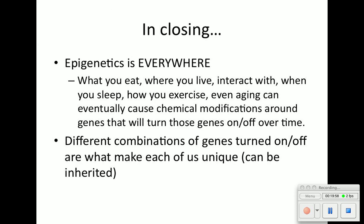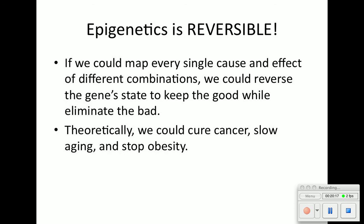In closing, epigenetics is everywhere. What you eat, where you sleep, who you interact with, when you go to sleep, how you exercise — even aging — can cause chemical modifications inside your DNA and could ultimately turn genes on and off over time. But it is reversible. If we can map every single cause and effect of different combinations, we could reverse gene states to keep the good while eliminating the bad. Theoretically, we could cure cancer, slow aging, and stop obesity.